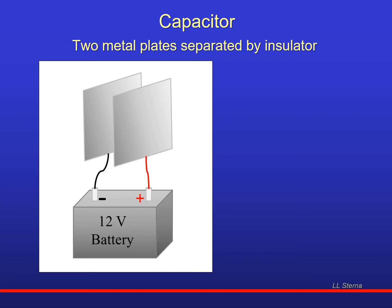A capacitor is two metal plates separated by an insulator. If you look at the picture, you see here is one metal plate, here's the other metal plate. In the picture, there's nothing between them, could be air. These two plates are connected to what I'm illustrating here, just a 12-volt battery, a typical battery you'd have in a car.